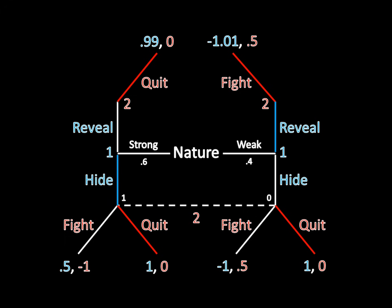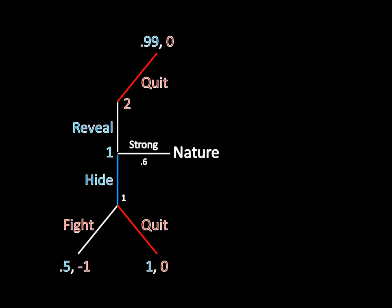Now that we have the strategies all laid out, we look for profitable deviations. Looking at the left side, the strong type in this proposed equilibrium is supposed to hide, and in that case Player 2 quits and Player 1 gets a payoff of 1. If he were to deviate to revealing, then Player 2 will still quit, but here he only gets a payoff of 0.99. So 1 is better than 0.99, which means the strong type is perfectly satisfied and does not want to deviate from his equilibrium strategy.